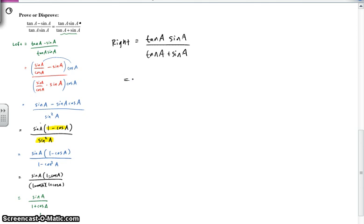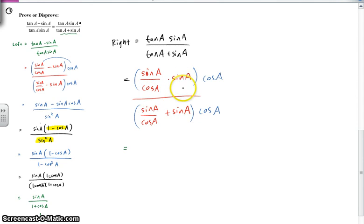Alright, so I'm just going to do what I did before. I'm going to change everything to sine and cosine. And then I'll do the same thing that we did before on the other side. I'm going to just multiply by cosine over cosine. And then similar thing is going to occur. I get sine squared A, and I get sine A plus sine A cosine A.